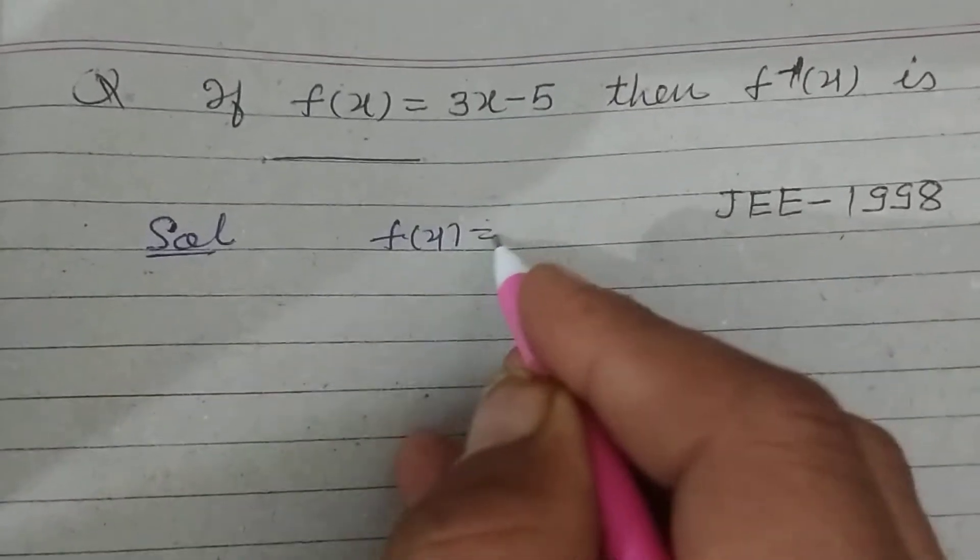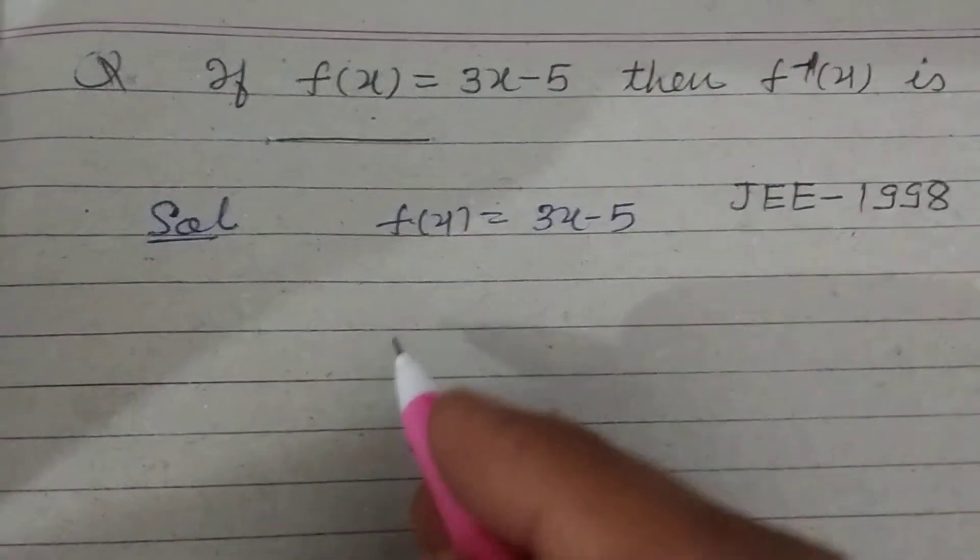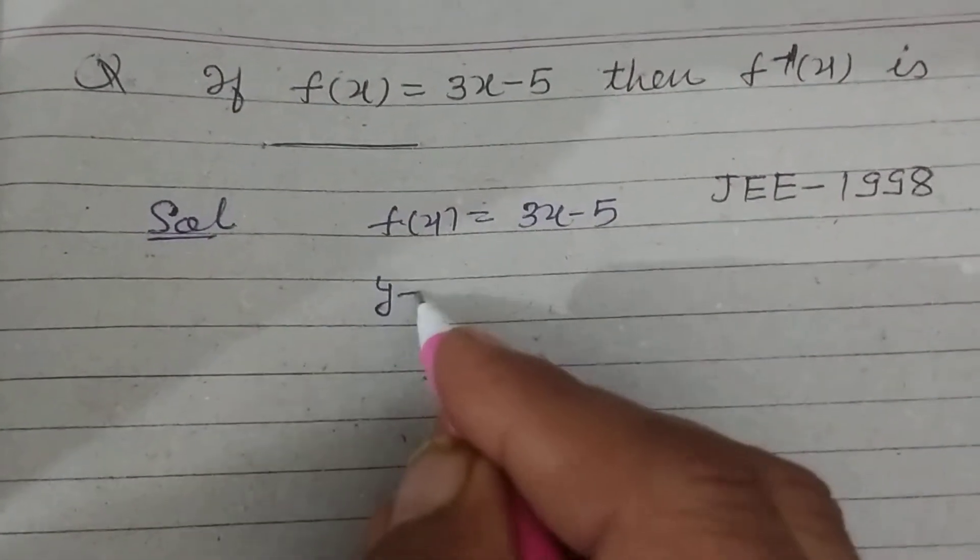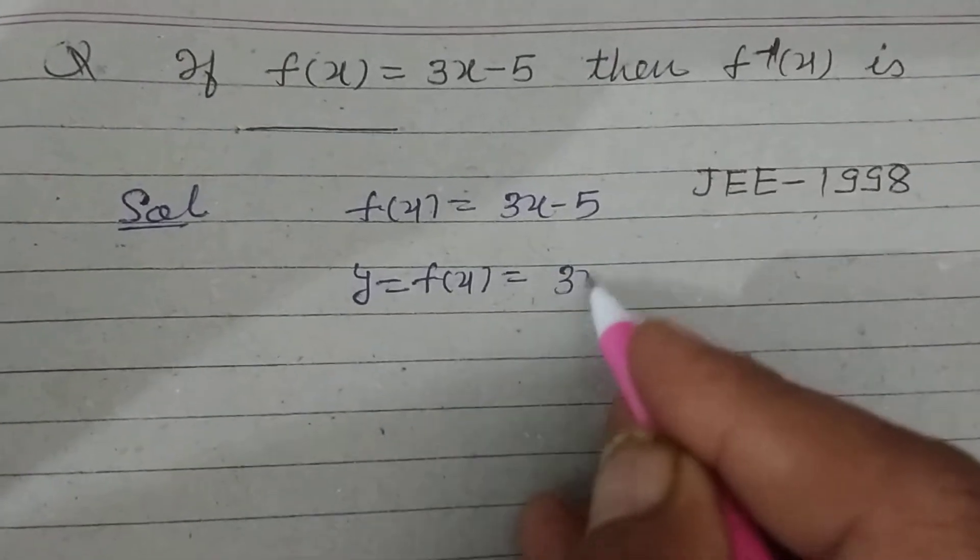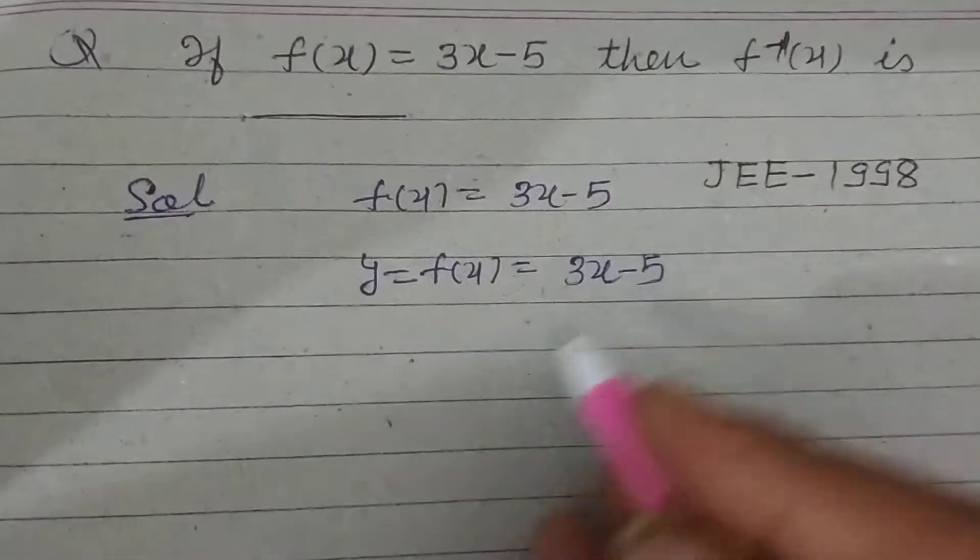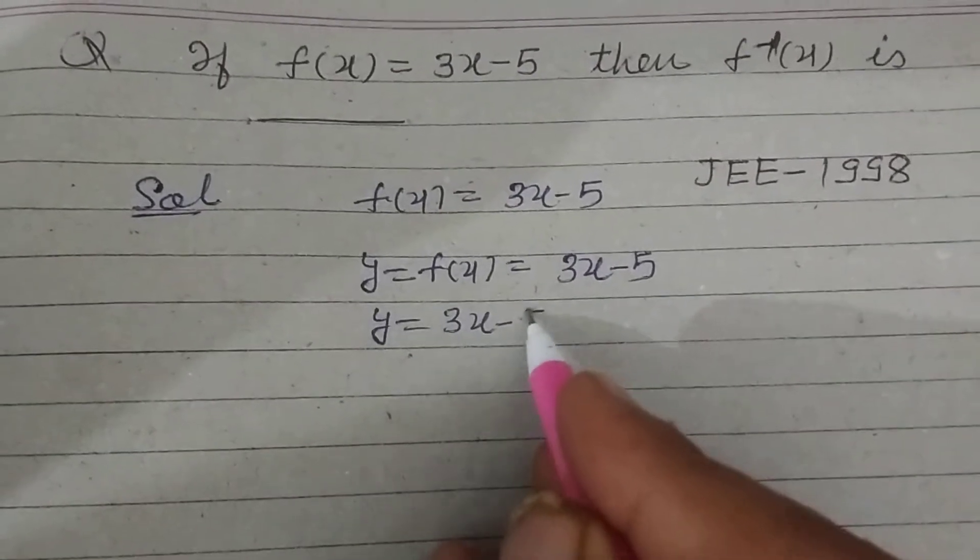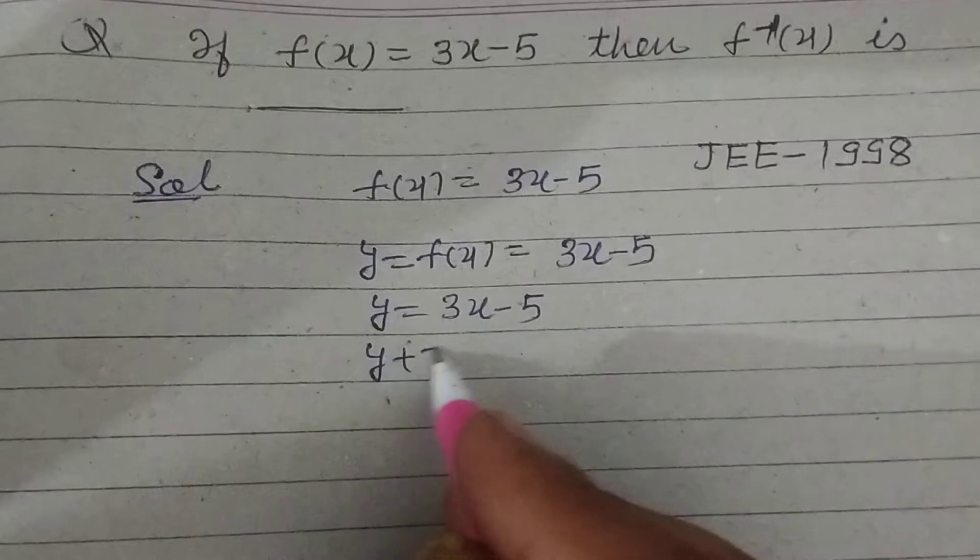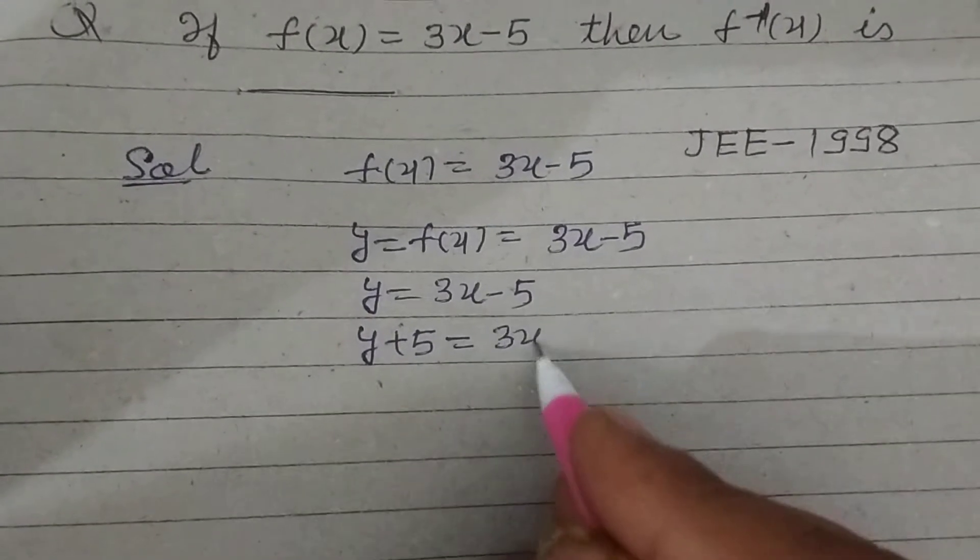Let y equal f(x) equals 3x minus 5. So y equals 3x minus 5. Bring 5 towards y, so this is y plus 5 equals 3x.